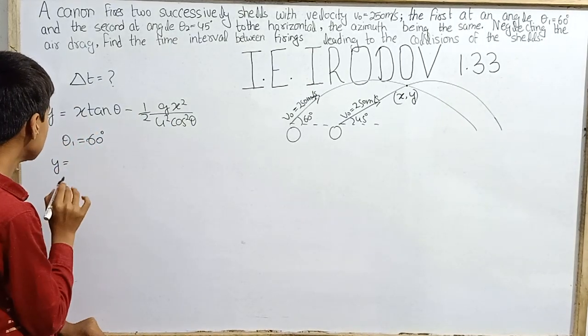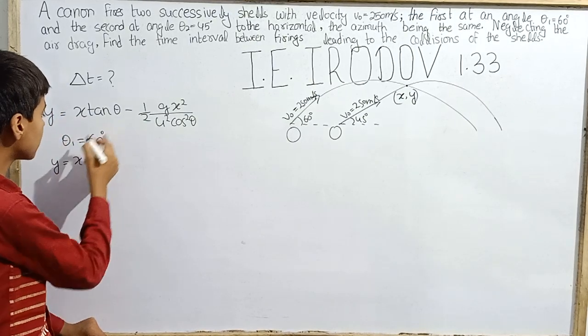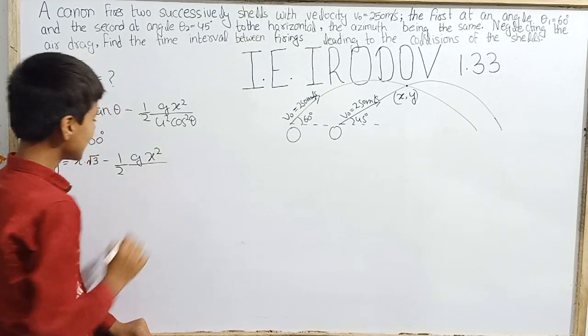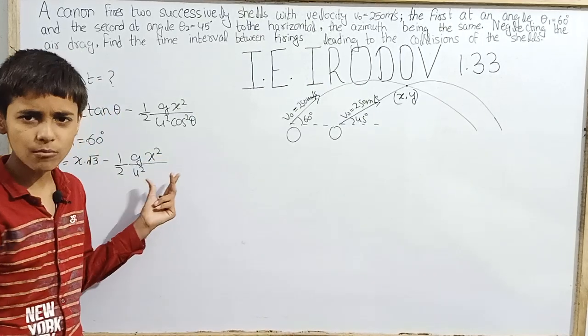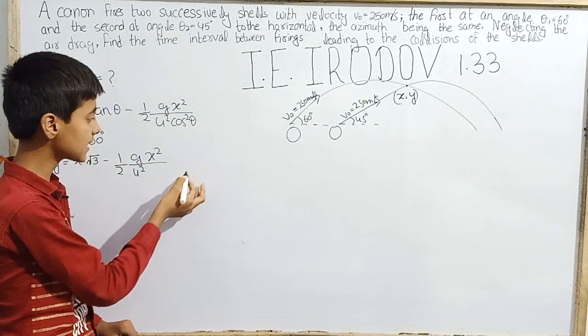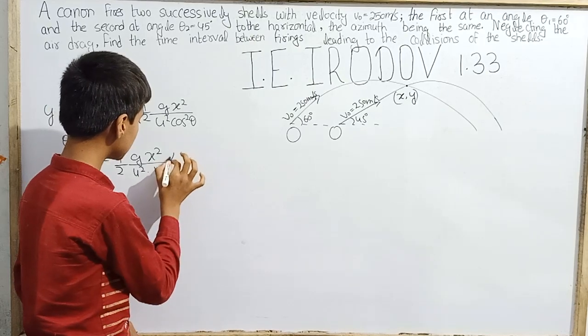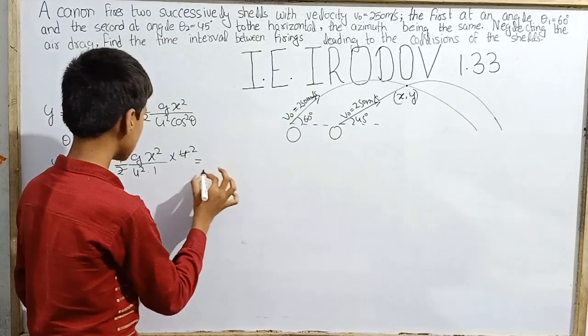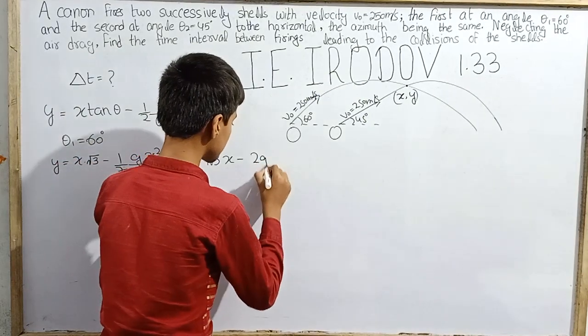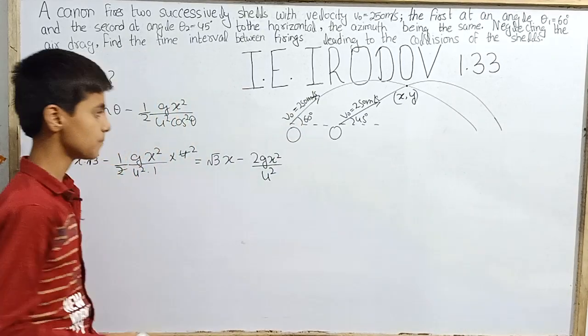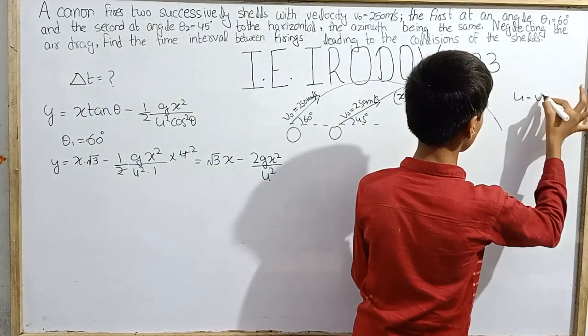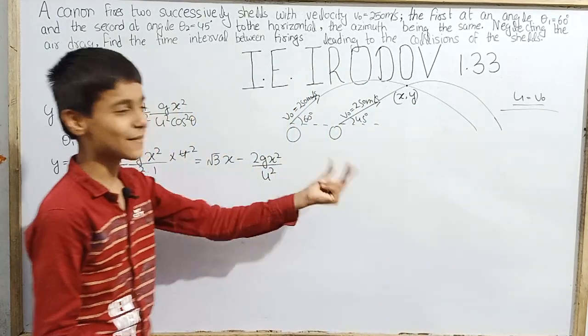For θ₁ equals 60 degrees: y equals x multiplied by tan 60 degrees which is square root of 3, minus half g x squared over u squared. Now cos squared 60 degrees is 1 by 2, so cos squared is 1 by 4. So we get 2g x squared. The equation becomes: y equals root 3 times x minus 2g x squared over u squared. Here u equals V₀, which is 250 meter per second.